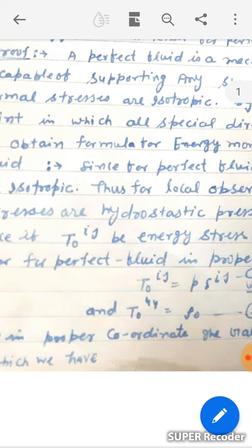Since for a perfect fluid the normal stresses are isotropic, for a local observer the normal stresses are hydrostatic pressure on the body. So T0_IJ, the energy-momentum tensor for the perfect fluid in the proper coordinate system, is: T0_IJ = P · δ_IJ where I,J = 1, 2, 3, and T0_44 = ρ₀.